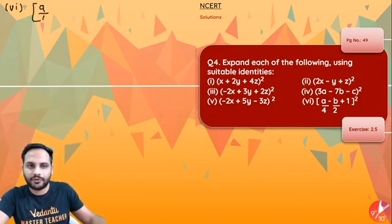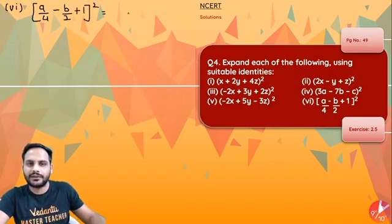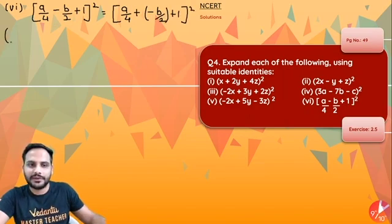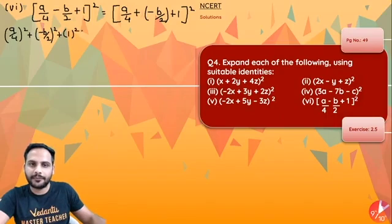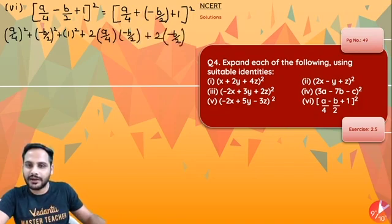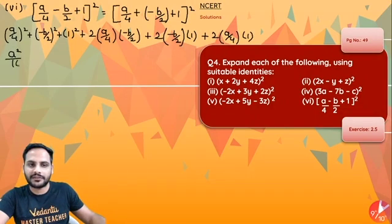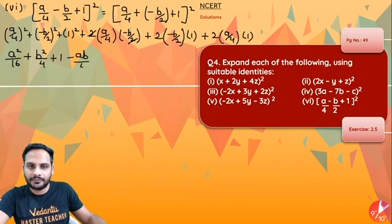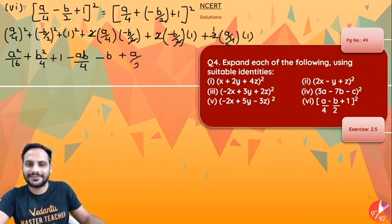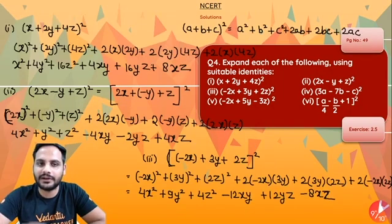The sixth one is (a/4 − b/2 + 1)². Write it as (a/4 + (−b/2) + 1)². It will be (a/4)² + (−b/2)² + 1² + 2·(a/4)·(−b/2) + 2·(−b/2)·1 + 2·(a/4)·1. So: a²/16 + b²/4 + 1 − ab/4 − b + a/2.